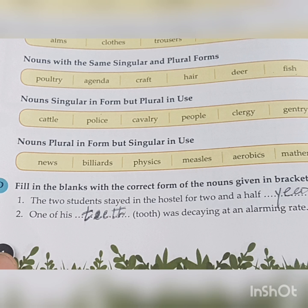Now please move to exercise D — fill in the blanks with the correct form of the nouns given in the brackets. Number one: the two students stayed in the hostel for two and a half — the answer is 'years'. Number two: one of his — the answer is 'teeth' — was decaying at an alarming rate.